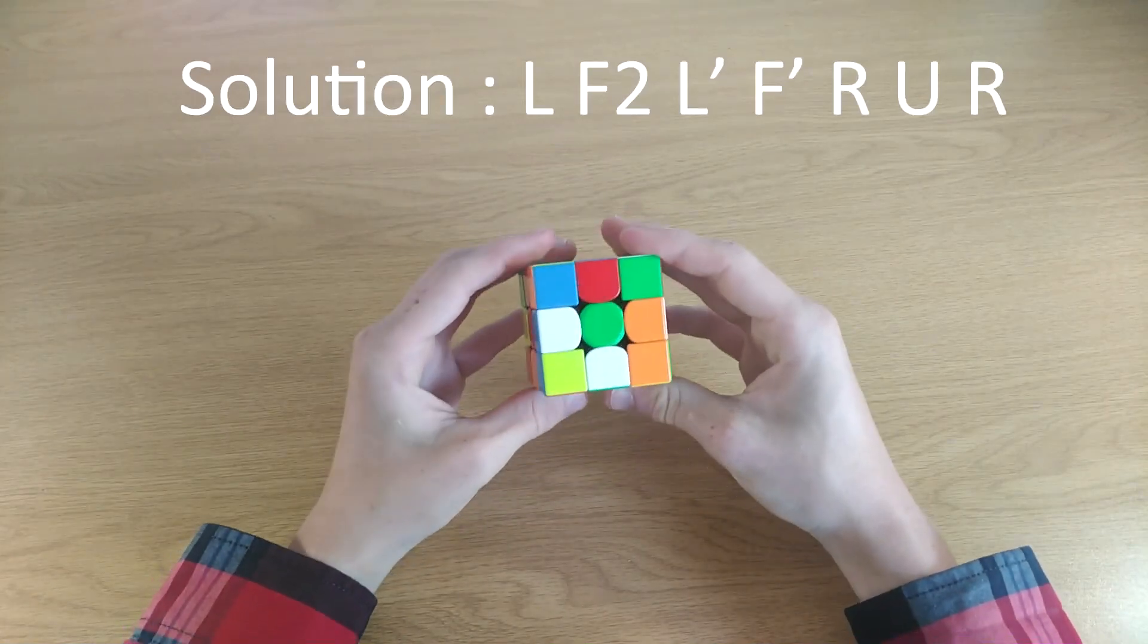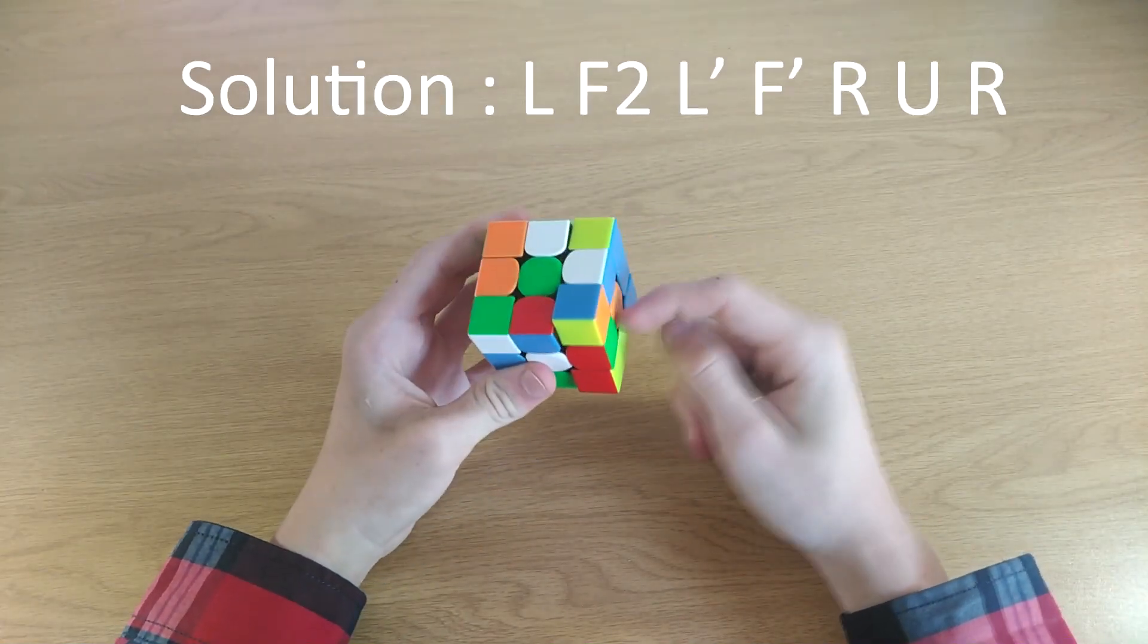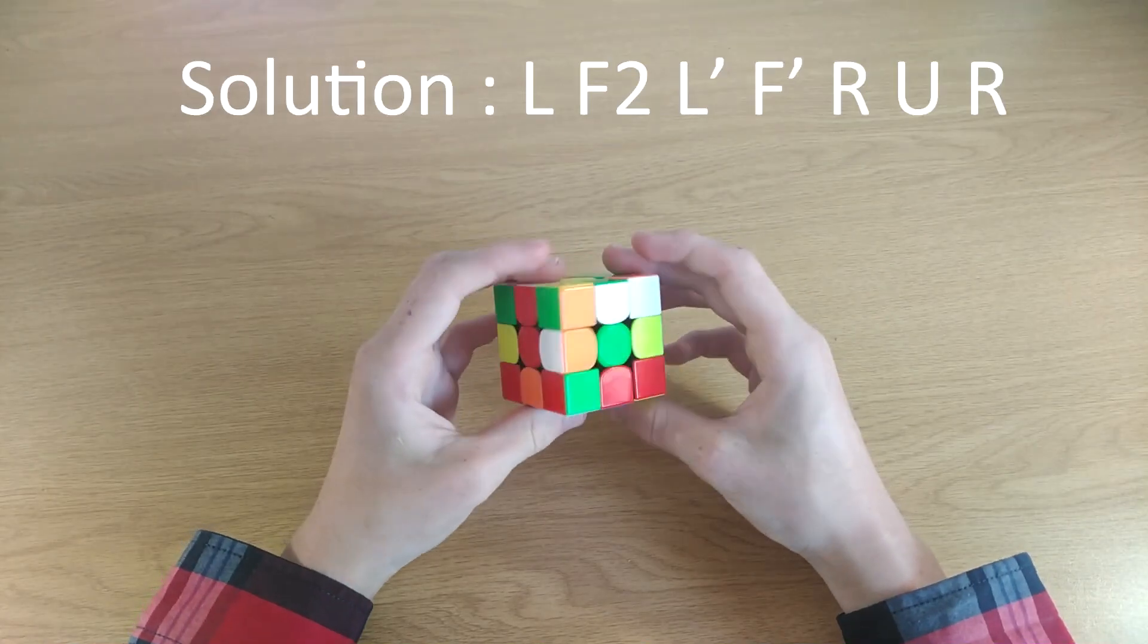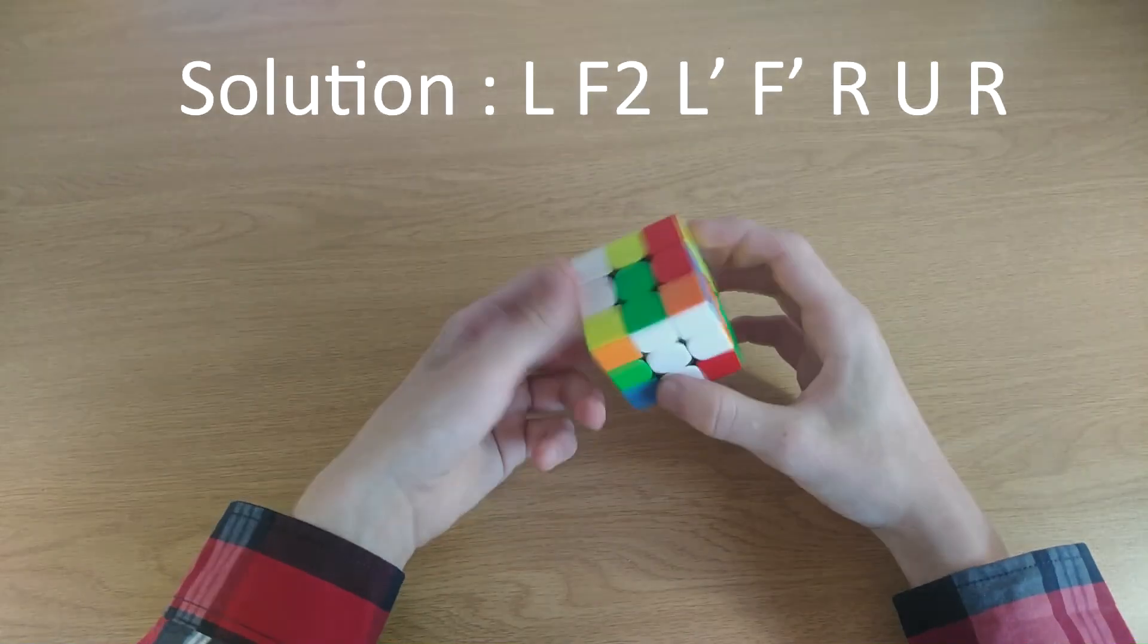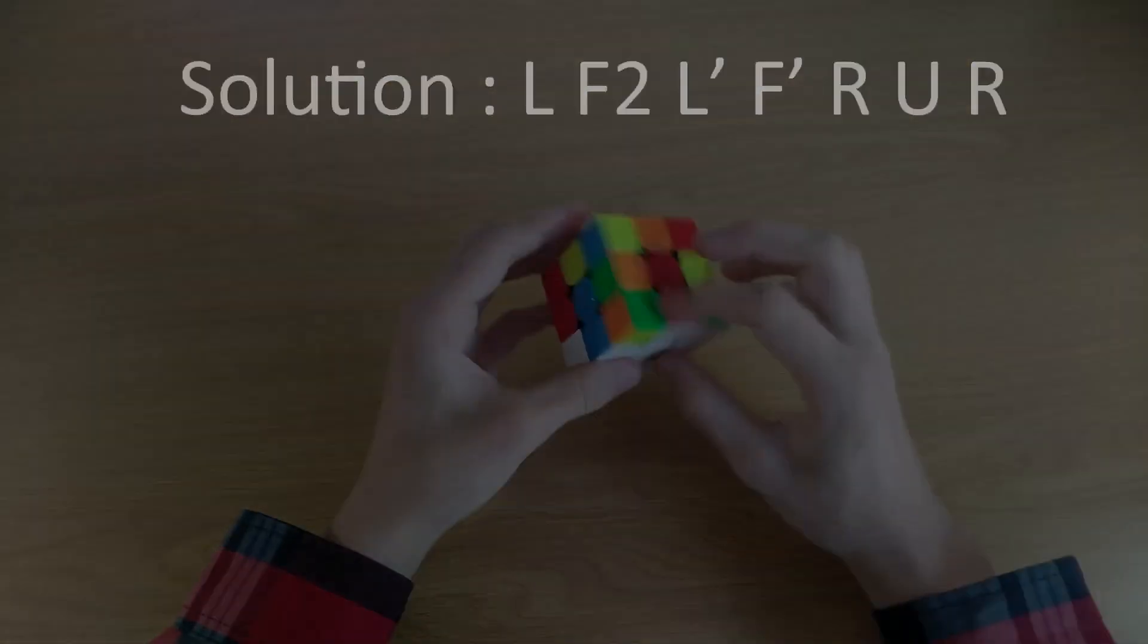So then we do an F2, then we insert this one with an L', then we can do an F' and insert this one with an R, align them correctly and then insert the last piece. And that one was seven moves.